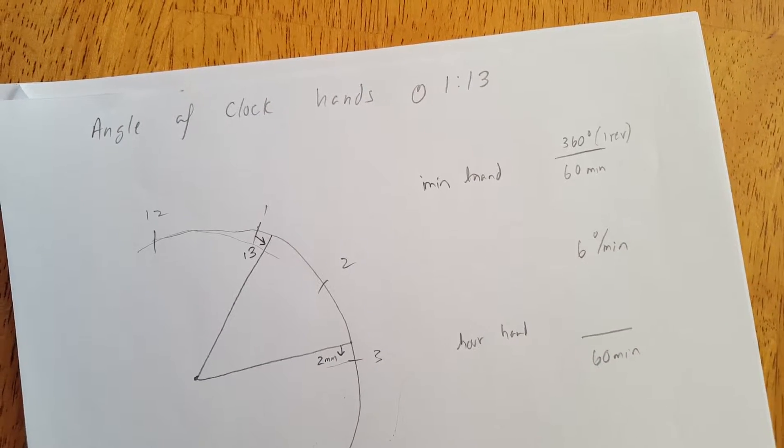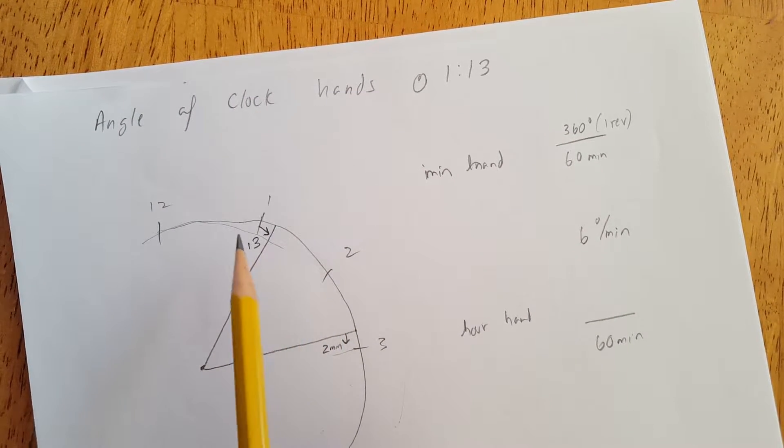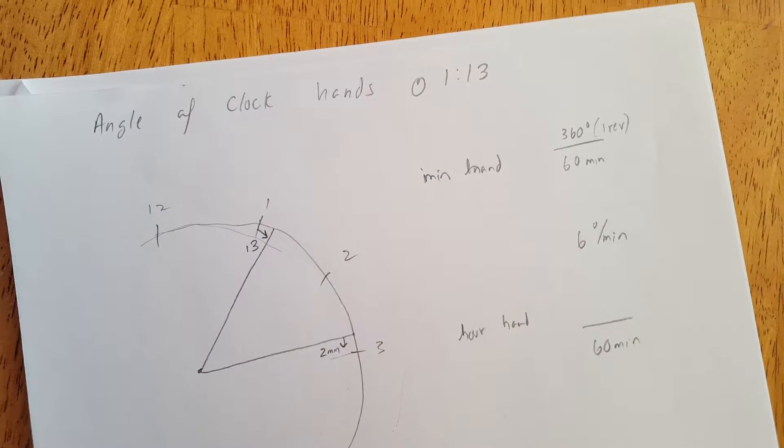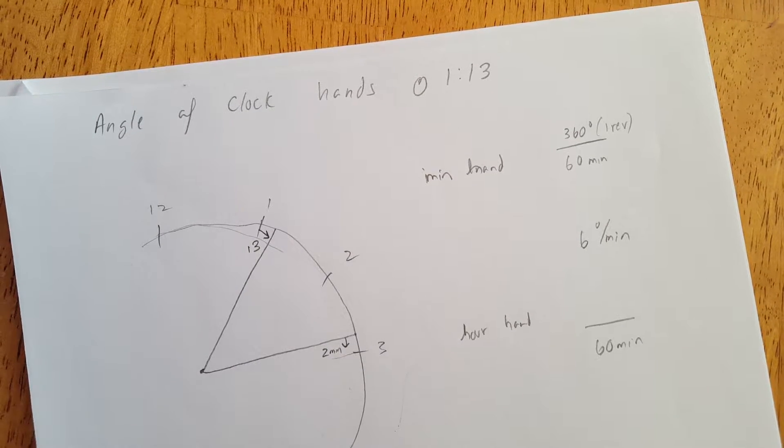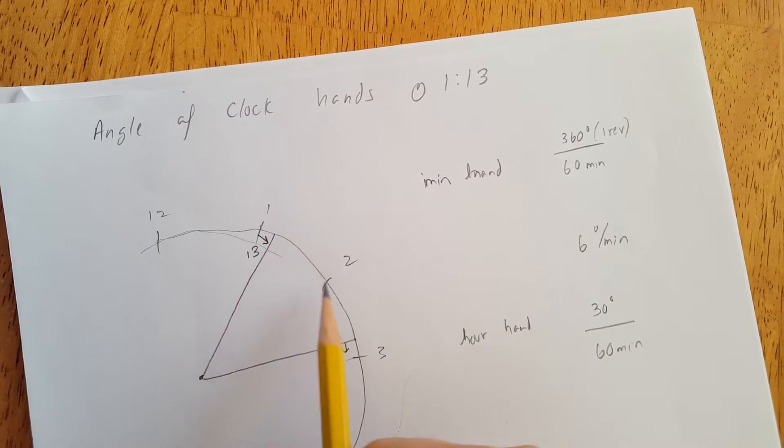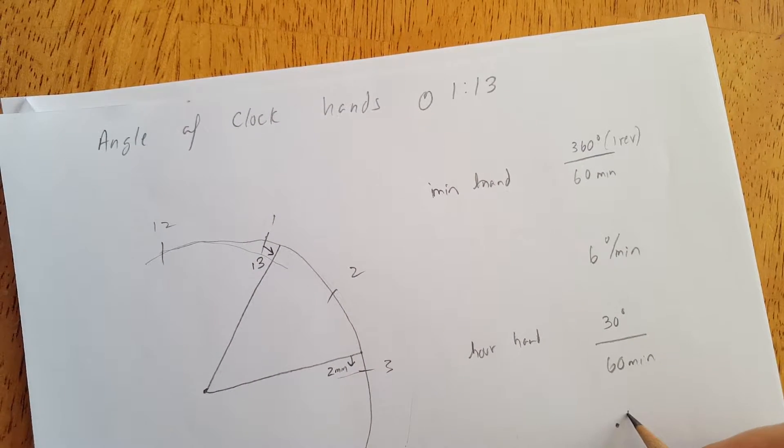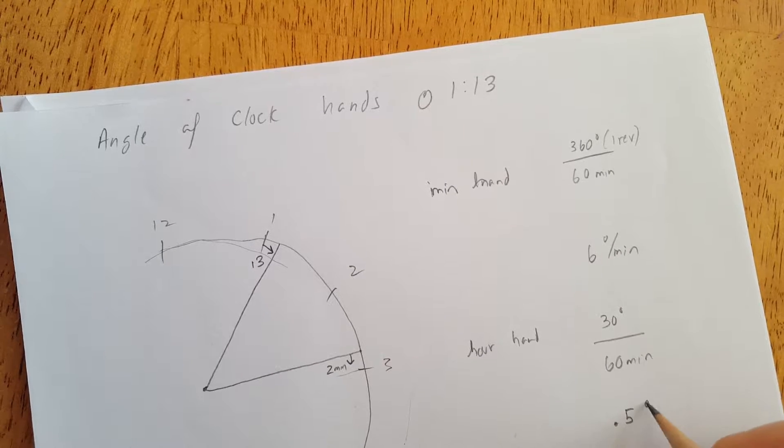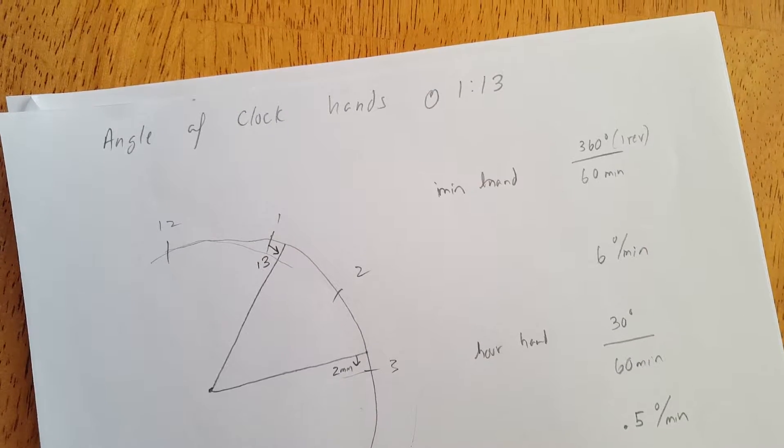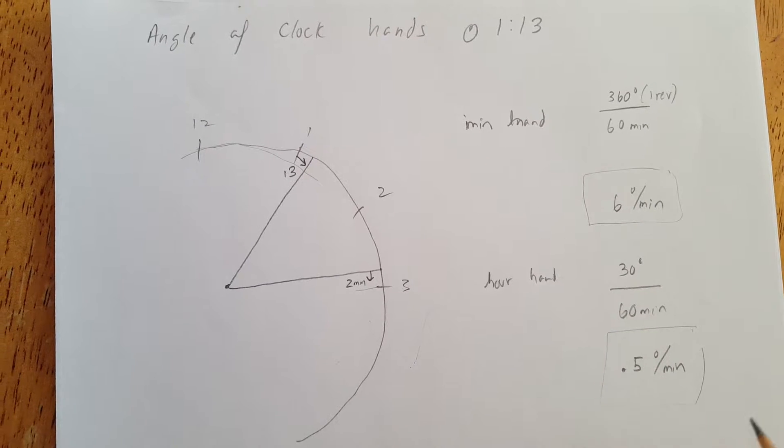But now how far does an hour hand go in 60 minutes? It only goes here. So 360 degrees divided by 12, 30 degrees. Minute hand goes 30 degrees in 60 minutes. That's good. So that gives us another ratio here of 0.5 degrees per minute. So the hour hand travels 0.5 degrees every minute. So those are the two numbers we needed. That makes the problem infinitely easier.